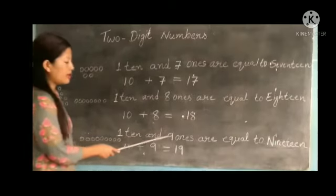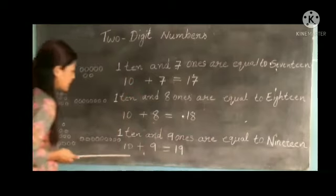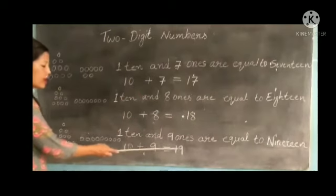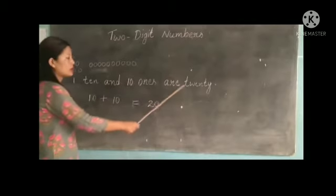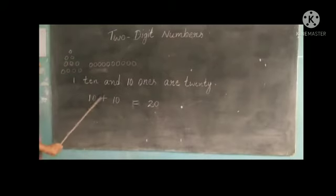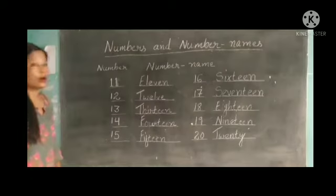10 plus 8 are 18. Ten plus nine are 19. One ten and 10 ones are 20. Ten plus ten are 20.